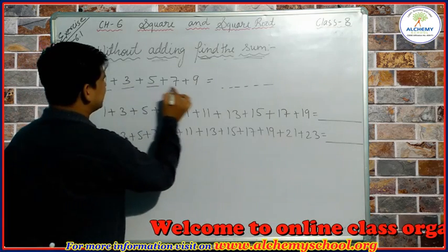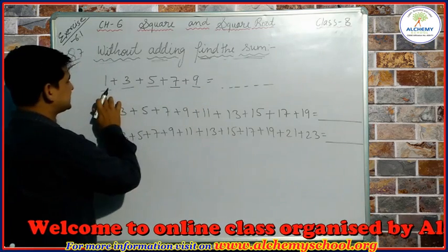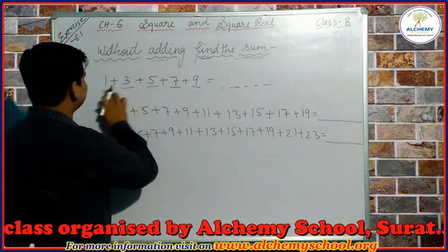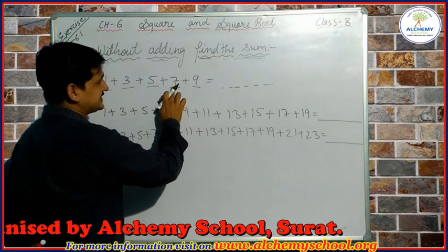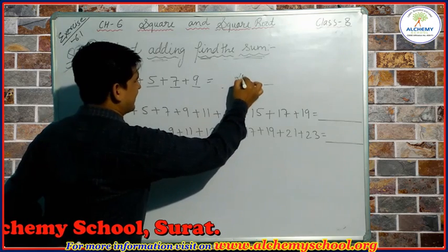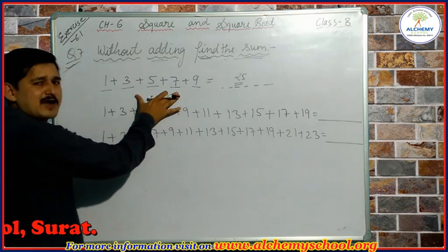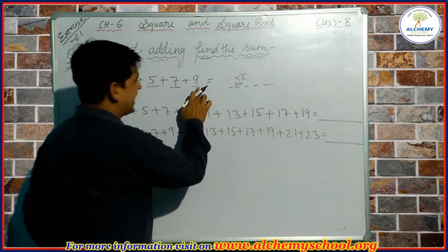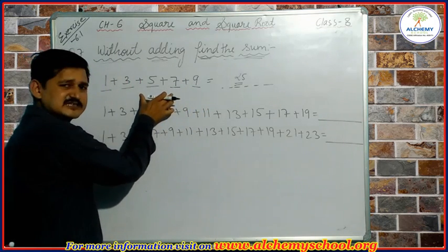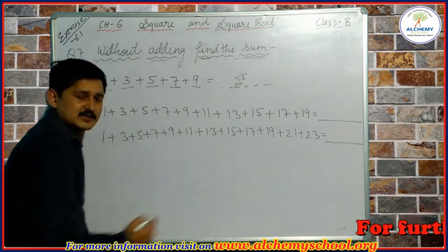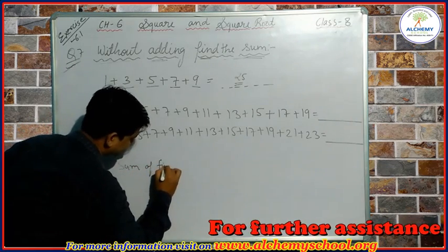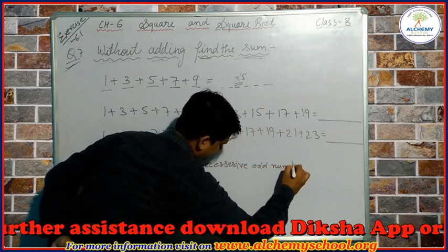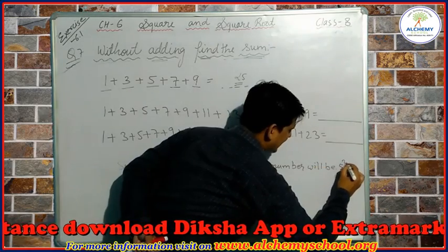When we observe these numbers we can see they are successive odd numbers: 1, 3, 5, 7, and 9. If we add them — 1+3=4, 4+5=9, 9+7=16, 16+9=25 — we get 25. But the question says we should not add them. We can see these are 5 successive odd numbers, specifically the first 5 successive odd numbers. So the sum of the first 5 successive odd numbers will be 5 square, which is equal to 25.